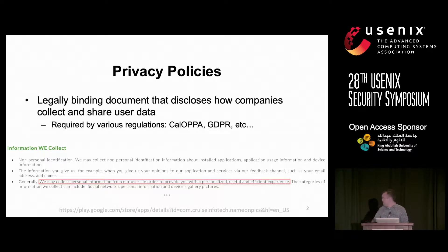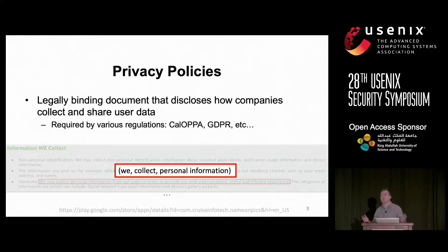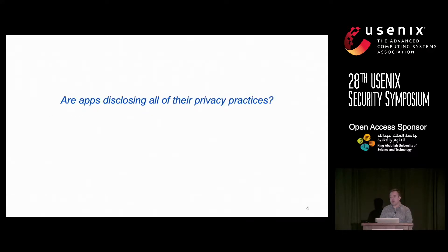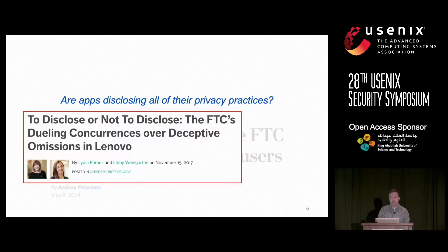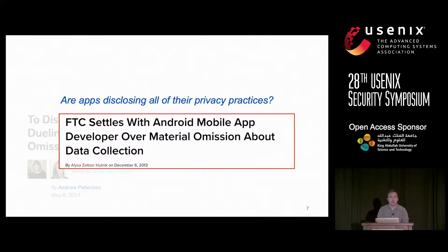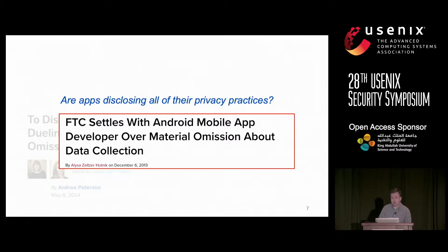Below is a little excerpt from a privacy policy of an Android app — in red it states that we collect personal information, so when using this app you assume it's going to collect some type of your personal data. But this raises the question: are all apps disclosing all of their privacy practices in their policies? In the perfect world the answer would be yes, but unfortunately that's not the case. Large companies such as Snapchat, Lenovo, and an Android app developer called Golden Shore Technologies — which had 50 plus million downloads — were omitting their privacy practices or being dishonest and misleading users, and they were fined by the FTC.